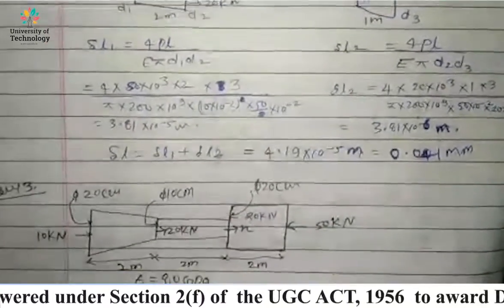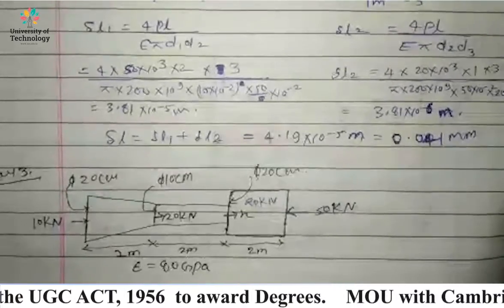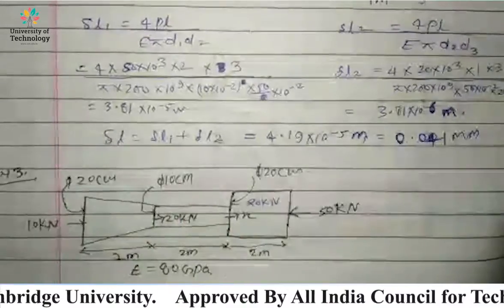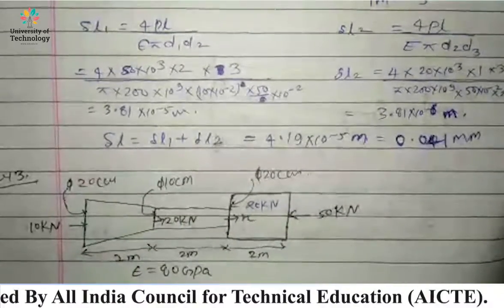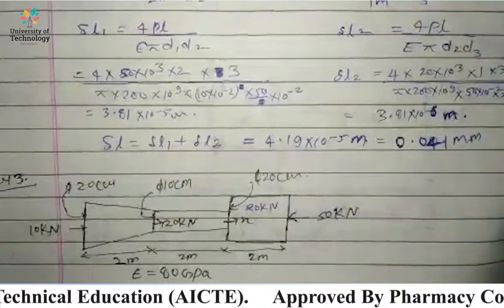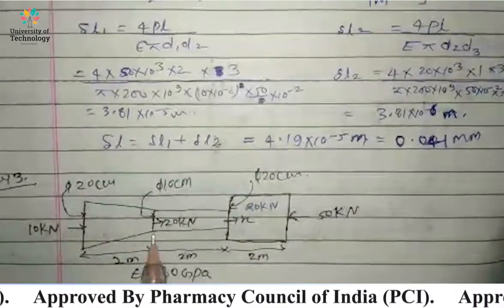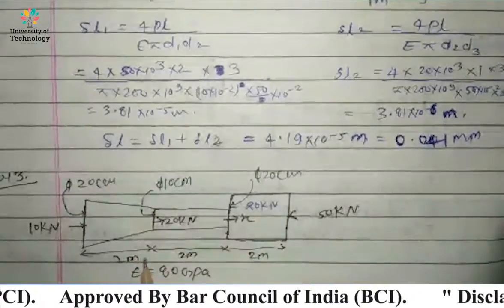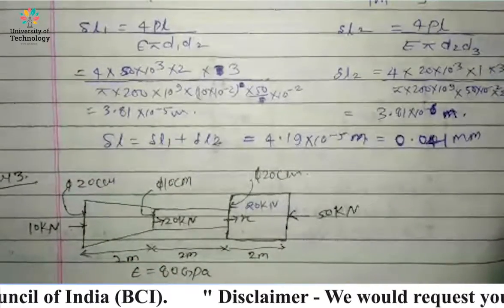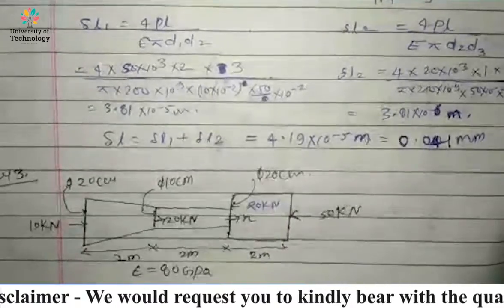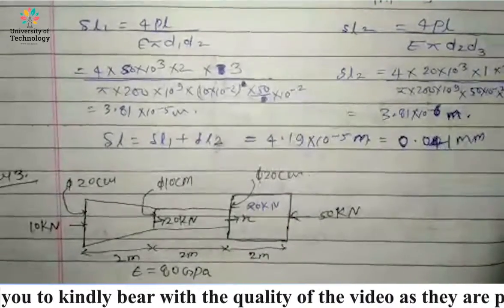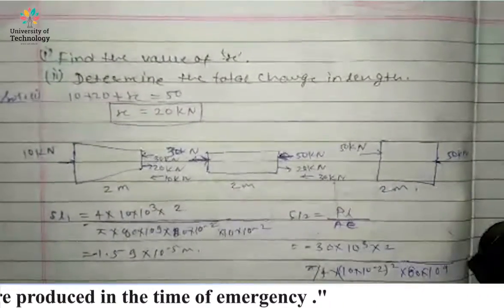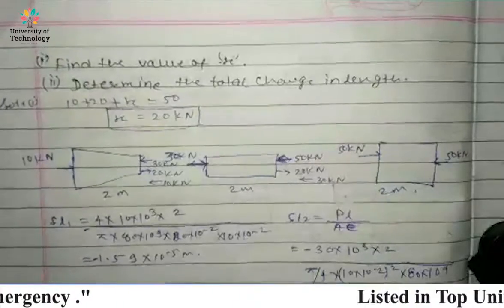For the next numerical, we can see this problem has three parts: 1, 2, and 3. The diameters are 20 cm, 10 cm, and 20 cm. The loads are applied as shown in the figure. The length of each tapered part is 2 meters, 2 meters, and 2 meters. The Young's modulus E is 80 GPa.